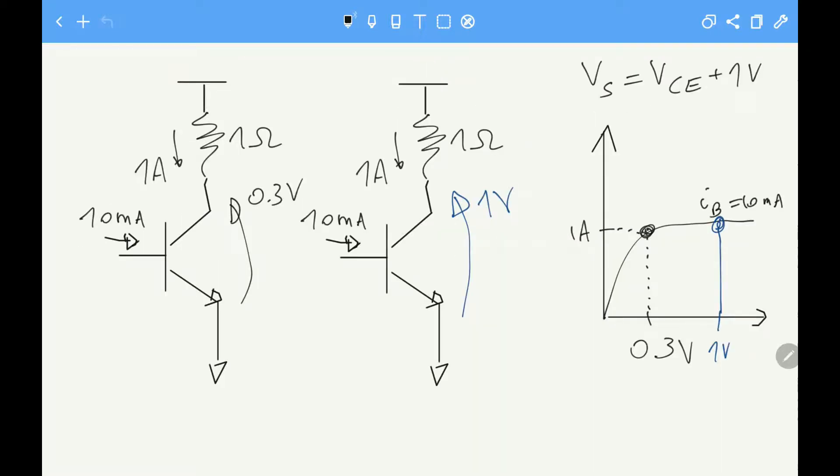So these are our two cases. Either we bias it at 0.3 volts as in this case, or we bias it at 1 volt as in this case. And according to this formula here, VS is equal to VCE plus 1 volt. So in this case it's 0.3 plus 1, which means 1.3 volts. And in this case it's 1 plus 1, so that means 2 volts. And the rest stays the same.